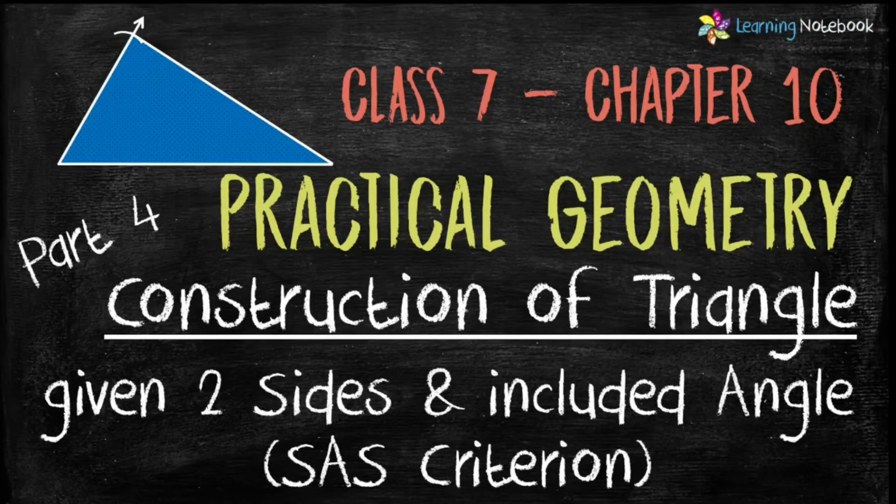In previous part, we learnt construction of a triangle when three sides of a triangle are given to us. Now today, in this part 4, let's learn the construction of triangle when we are given two sides and its included angle.